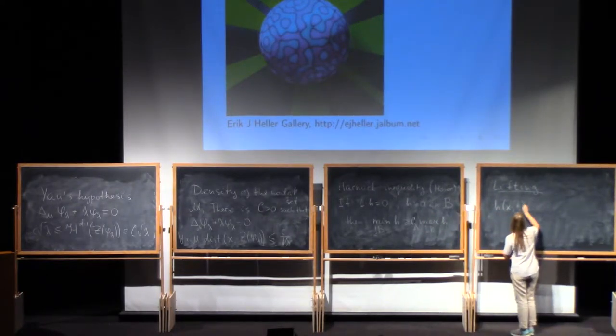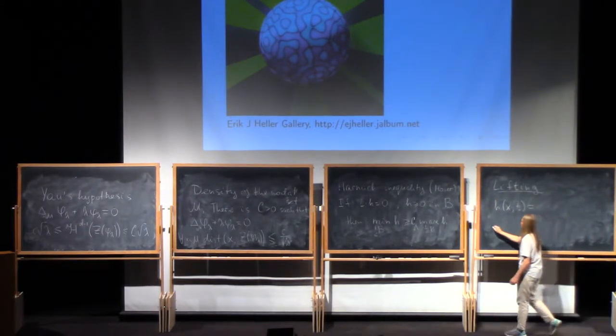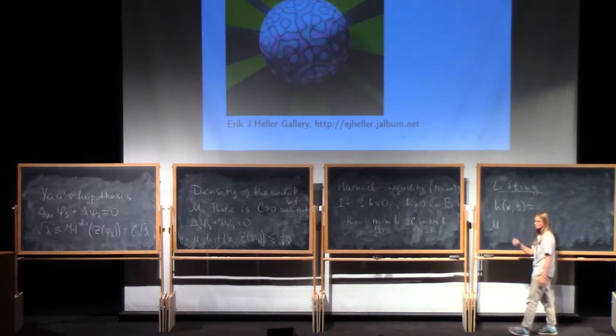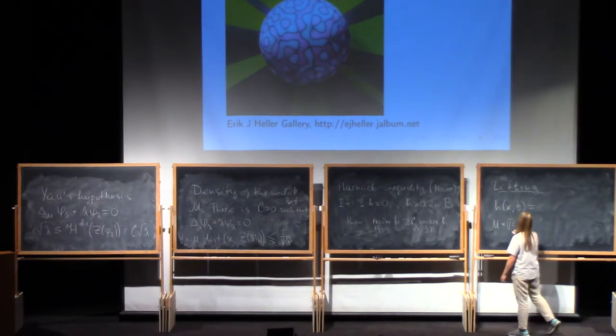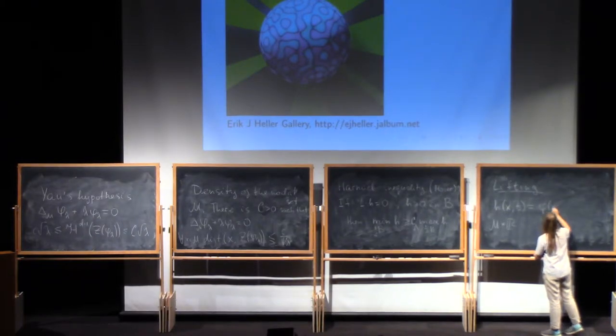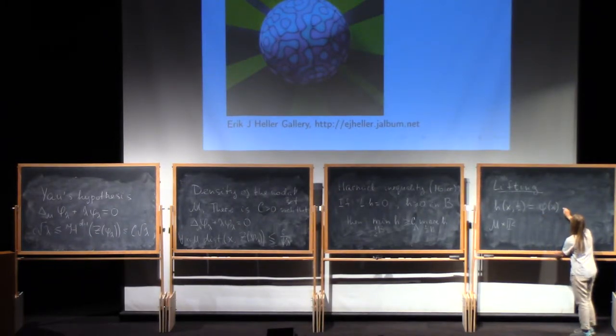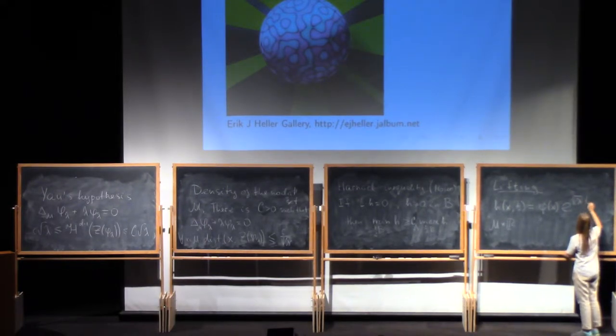And you can always do it by introducing a new variable and looking at a function that is now defined on your manifold, or your domain, times R. In the following way, you take the value of the eigenfunction at point x and multiply by exponential to the power of the square root of lambda t.